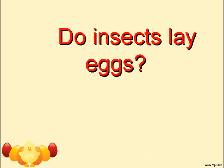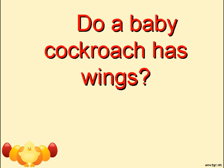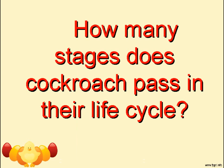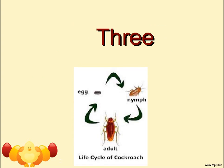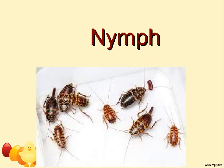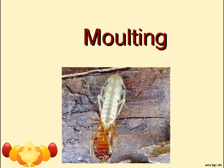Do insects lay eggs? Yes. Does a baby cockroach have wings? No. How many stages does a cockroach pass through in its life cycle? Three. What is a baby cockroach called? Nymph. Shedding of old skin is called molting.